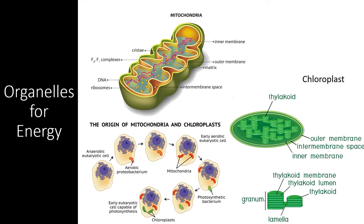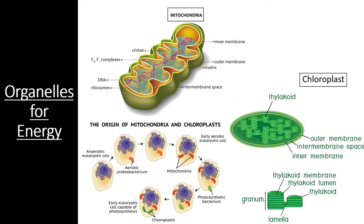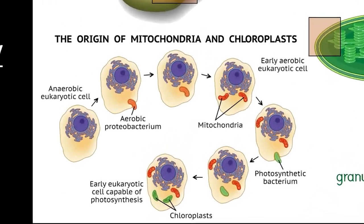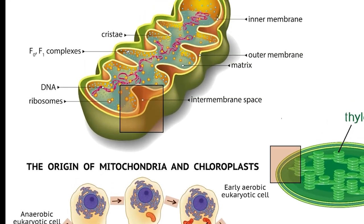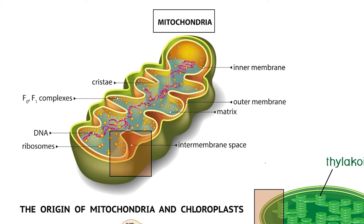While the endomembrane system is highly specialized for maintaining and repairing a growing cell, other organelles are responsible for capturing, storing, and utilizing the energy needed to power the many reactions the endomembrane system needs to complete. These organelles are chloroplasts and mitochondria. Both of these organelles have a double membrane system, likely because they evolved from symbiotic bacteria billions of years ago. The endosymbiotic theory states that early eukaryotic cells phagocytized smaller bacteria, which, instead of being digested with lysosomes, evolved a symbiosis with the cells, allowing them to produce and utilize energy more efficiently.